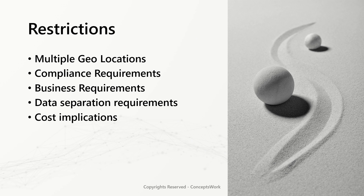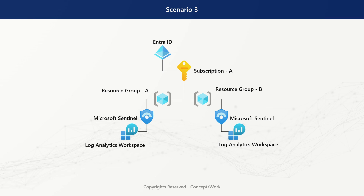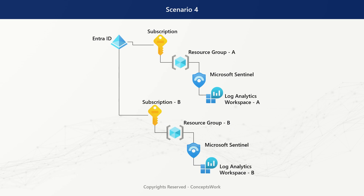The scenario can be slightly different when you have requirements like saving data in different regions, compliance requirements, or business requirements where billing for two child companies should be separate, or there are data separation and cost implication requirements. In this case, even with one single subscription, you can create two different resource groups and two different instances of Microsoft Sentinel in different regions. Alternatively, with two different subscriptions already located in different regions, you can set up a separate Microsoft Sentinel instance for each subscription.